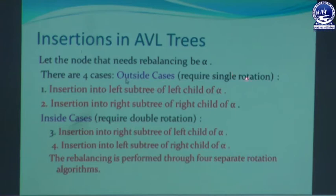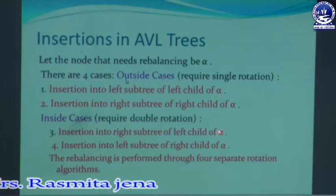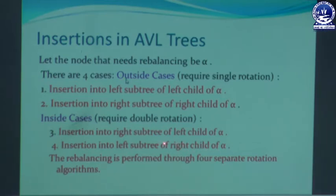The second category is the inside case. In inside cases the node requires double rotation. The two inside cases are: insertion into the right subtree of the left child of alpha, and insertion into the left subtree of the right child of alpha. In each case the node alpha needs rebalancing. The rebalancing is performed through four different rotation algorithms. We will briefly discuss these four different cases with a simple example.